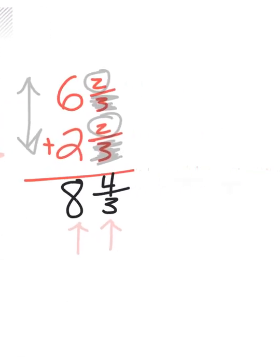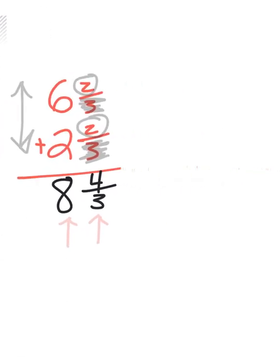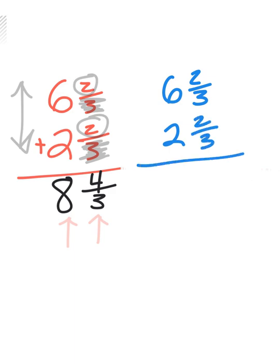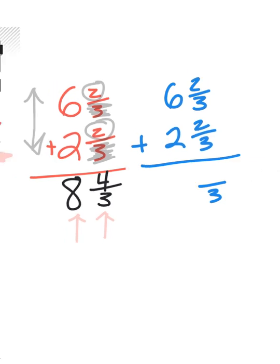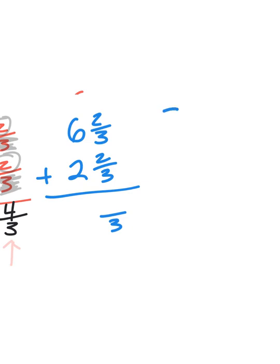So let's look at this problem again. Six and two-thirds plus two and two-thirds. Let's pick a new color to differentiate. Six and two-thirds plus two and two-thirds. Now, if I know that I'm adding thirds, and I don't have to worry about the denominator, I'm just thinking about the top number. So two plus two is four. Four is one more than three. Four is one more than three.